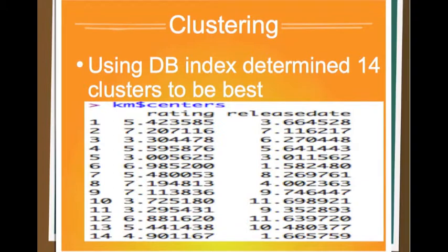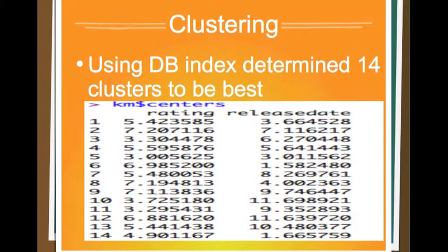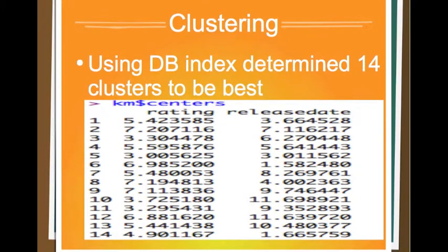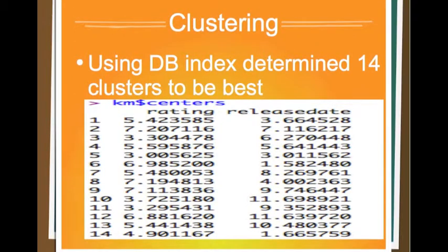Using the DB indexes, I was able to determine that 14 clusters would be my best bet to actually look at the data. You can see here the centers of each cluster. It looks pretty nice and I can see a lot of good results coming from this, which I'll explain in a few slides from now.